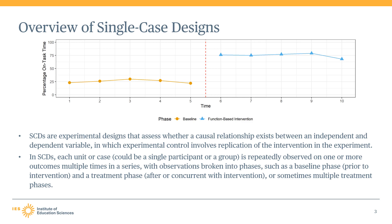Throughout these modules, we will present a number of examples in plotted form. In applied practice, single case designs heavily depend on plots for assessing data quality and demonstrating study results. Early on in these modules, you will see many plots where different conditions have different colors and shapes. We have done this to assist trainees unfamiliar with these studies. In practice, most single case design studies use black and white plots where the shape of the point corresponds to different outcomes.